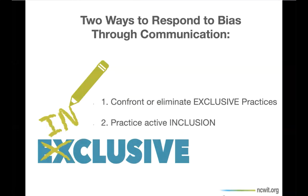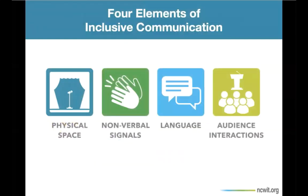It's important to remember that we're always sending signals to our audiences with everything we say and do, as well as what we don't say or do. Therefore, we want to be aware of the explicit and implicit messages that we're sending so that we can be effective at confronting bias as well as promoting inclusivity. There are four elements of communication we want to talk about: the first is the physical space or environment; then there's nonverbal signals such as body language and eye contact; then there's verbal messages and language; and finally, the way we structure our interactions with our audiences — in this case with our students and others in our departments.